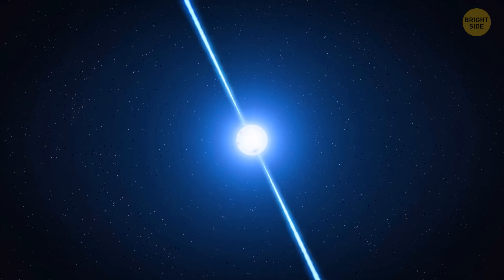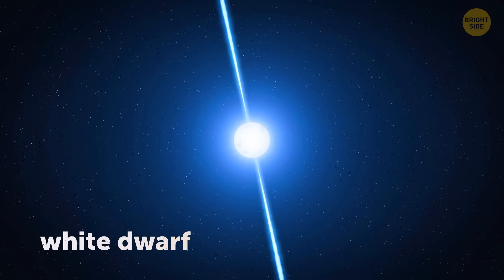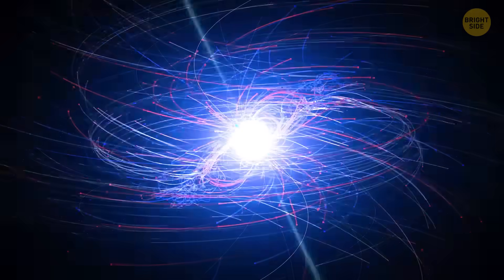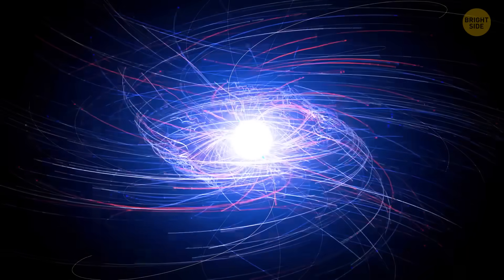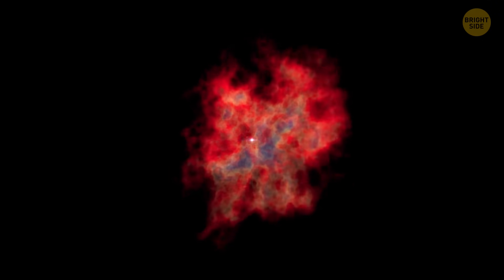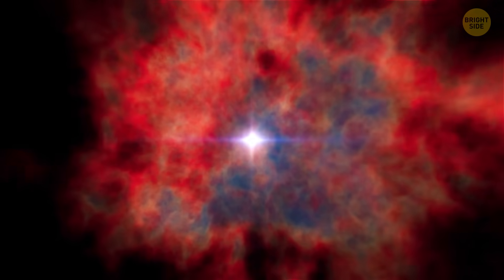This kind of explosion happens like this. A super-dense dead star called a white dwarf starts stealing material from a nearby star. It keeps sucking in stuff until it just can't handle the weight anymore, then it blows up in a huge burst of energy. Now, that part makes sense.